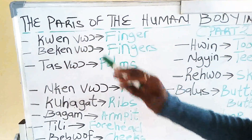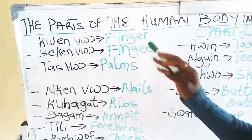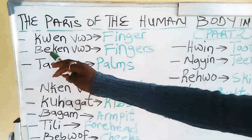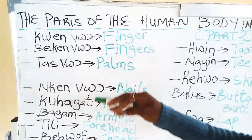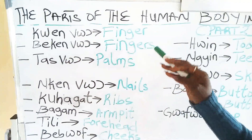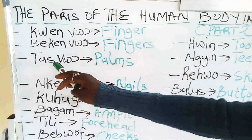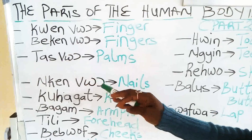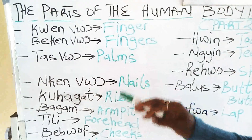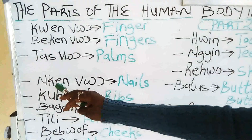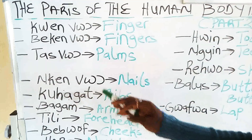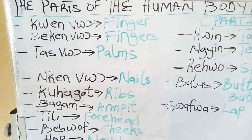Kwenvo, finger. Bikenvo, fingers. Tasvo, palms. Inkenvo, nails.